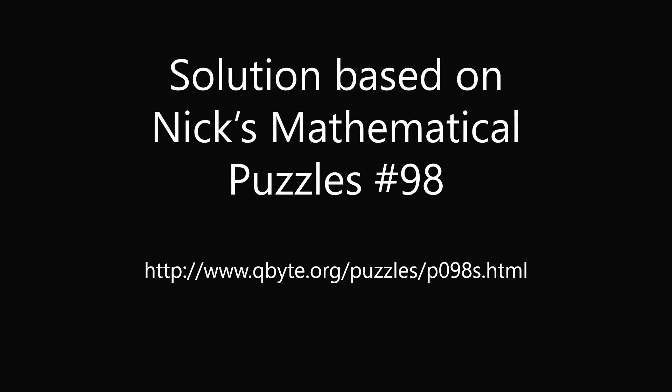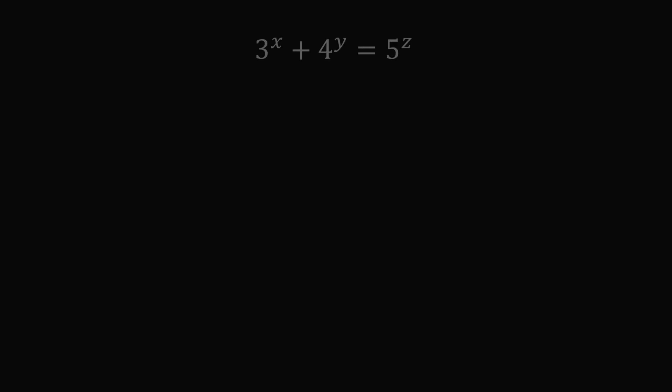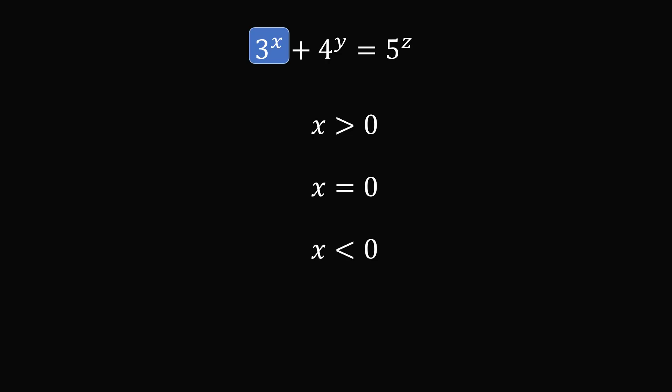I will present a solution based on Nick's Mathematical Puzzles number 98. For this type of problem, it's best to read the solution and work through it. But for completeness in this video, I will present a video solution. However, I will go very quickly — consider it a speedrun proof. We will first analyze 3 to the power of x. There are three cases for x: x can either be greater than 0, equal to 0, or less than 0. We'll consider each case in turn.